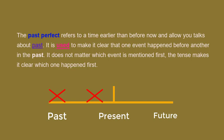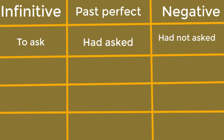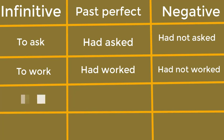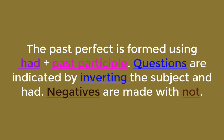It does not matter which event is mentioned first — the tense makes it clear which one happened first. Form of past perfect tense: infinitive to ask, past perfect had asked, negative had not asked. Infinitive to work, past perfect had worked, negative had not worked. Infinitive to go, past perfect had gone, negative had not gone. Infinitive to take, past perfect had taken, negative had not taken.